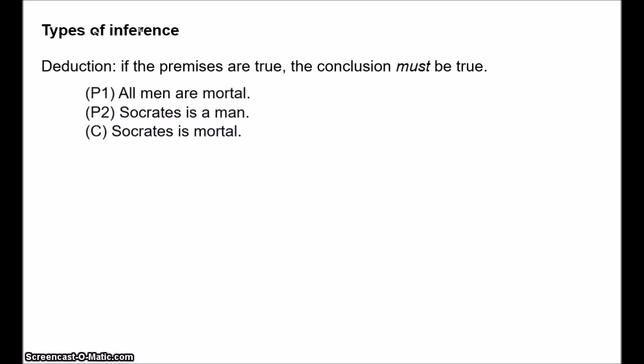The classic example is, all men are mortal, Socrates is a man, therefore Socrates is mortal. If the premises of this argument are true, the conclusion must be true. It cannot fail to be true. There's no possible way that the premises could be true and the conclusion false. It would just be contradictory. You can't even imagine a situation in which these premises are true and the conclusion is false.